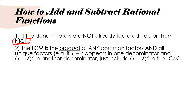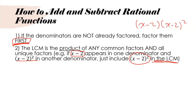Once factored, you need to find the lowest common multiple, which is the product of any common factors and the unique factors. Unique factors are factors that come up uniquely in one of the rational functions. So if x minus 2 appears in one denominator and x minus 2 squared appears in another, you only include x minus 2 squared in the lowest common multiple — not both. Multiplying x minus 2 by x minus 2 squared would give you x minus 2 cubed, which is not the lowest. So x minus 2 squared would suffice.